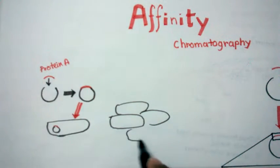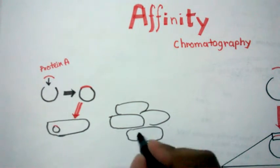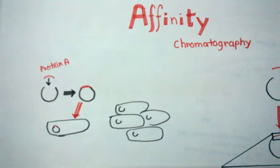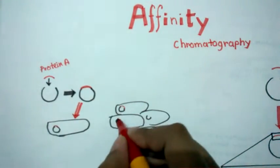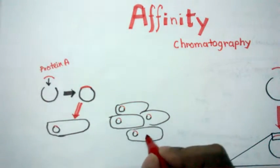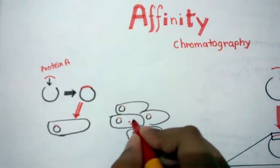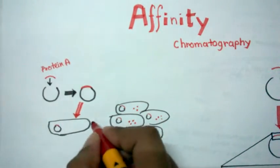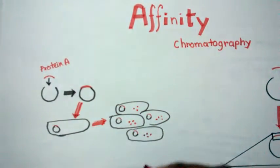And the bacteria would multiply over time producing many bacteria. Here you can see it is producing many bacteria and each time the expression vector would express inside the bacteria and would produce a lot of protein of our interest.